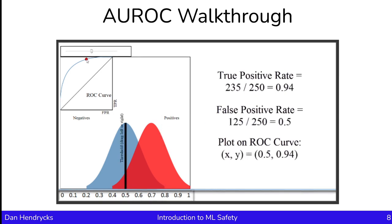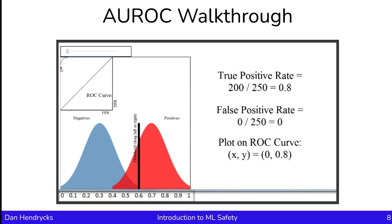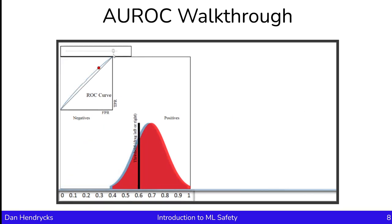If we change the threshold, the true positive rate and false positive rate increase. As we make the threshold more lenient, there are more true positives and more false positives. This gives us a different point on the ROC curve at (0.5, 0.94). So the ROC curve shows performance at various different thresholds, and the area under the ROC curve is a threshold-independent metric. Here's another example where we have an anomaly scoring function that better separates between the two distributions: the true positive rate is 80% and the false positive rate is 0%, so the AROC is generally higher. In a final example where the anomaly scoring function is much worse, the AROC is almost 50%, and moving the threshold at various locations doesn't make much of a difference.